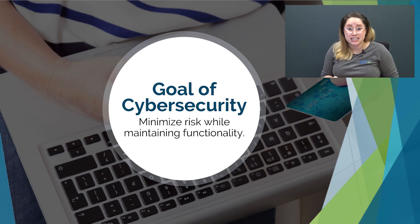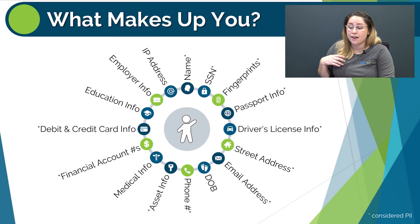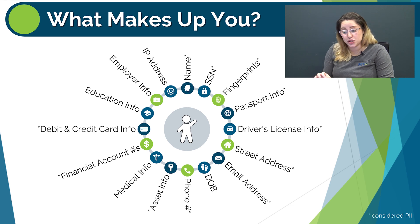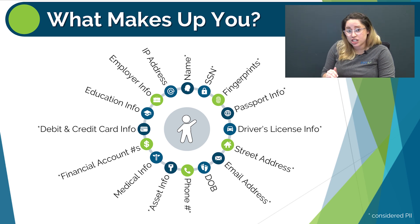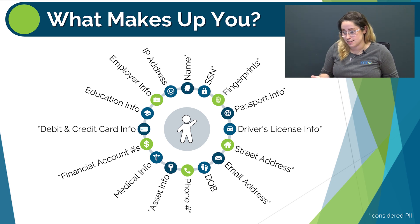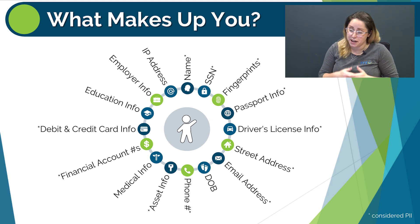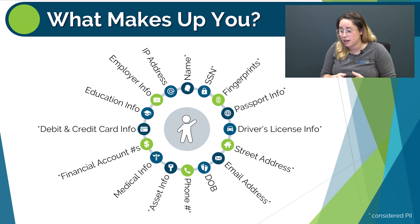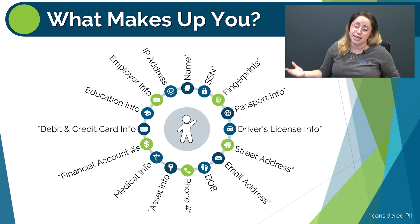Bottom line, there's no way to completely eliminate risk. We're just in the business of minimizing it to the best of our ability. Here we have a purposefully chaotic figure to demonstrate the vast amount of information that can be used to identify you. The pieces of information with an asterisk by them are considered PII, or Personally Identifiable Information. PII is any information that can be used to distinguish one person from another and can be used for de-anonymizing previously anonymous data. PII is the information that organizations spend hundreds of thousands of dollars to protect because if that information were compromised, a lot of harm could be done in the form of identity theft, fraud, and more.